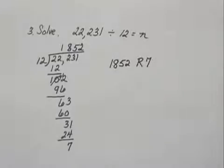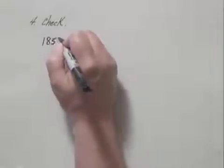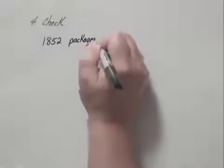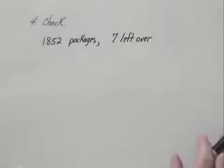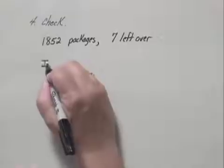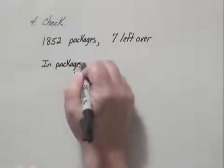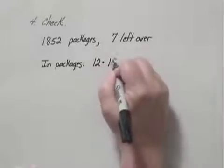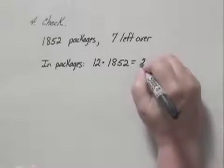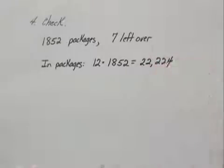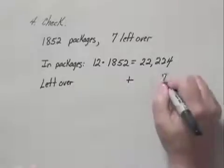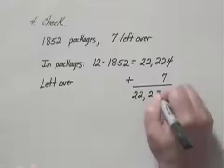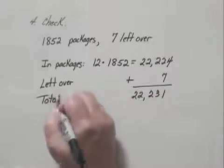Now in the fourth step, which is check, we need to think what that number actually means. Well, that would mean that we would have 1,852 packages that we could make, and 7 left over. Does that check? Well, in the packages, how many cakes would there be? In the packages, we would have 12 times 1,852, which if you do the multiplication is 22,224. And if we add the number left over, which would be 7, we should have the total. 22,231 was the total number of cakes, and that does check with the total that we were given in the problem.